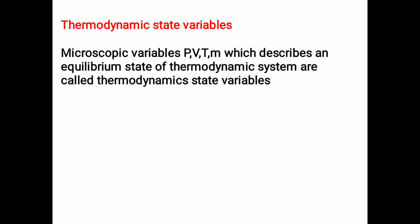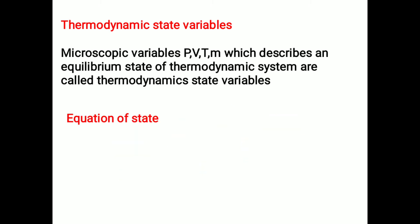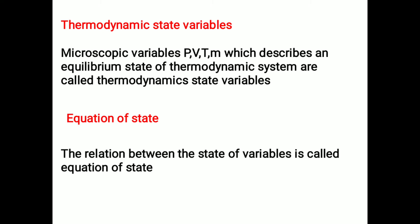Let us learn about thermodynamic state variables. Macroscopic variables such as pressure, volume, temperature, and mass, which describe an equilibrium state of a thermodynamic system, are called thermodynamic state variables. The relation between the state variables is called the equation of state; for an ideal gas, pv equals N·kT.